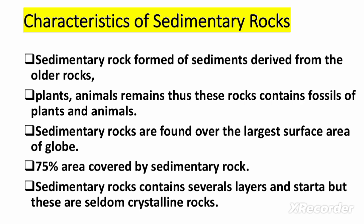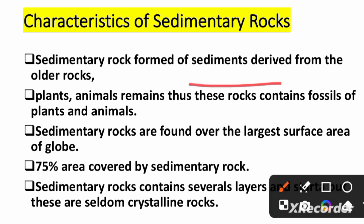Coming to the characteristics of sedimentary rocks: sedimentary rocks are made of sediment derived from older rocks — joe sedimentary rock hai, yeh purani rocks ke sediment se banti hai. These rocks contain fossils of plants and animals, because the remains of plants and animals get buried within the sediment layers and are preserved in sedimentary rocks.